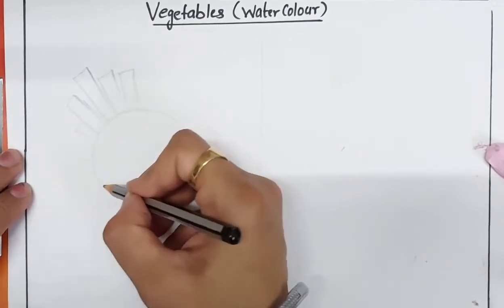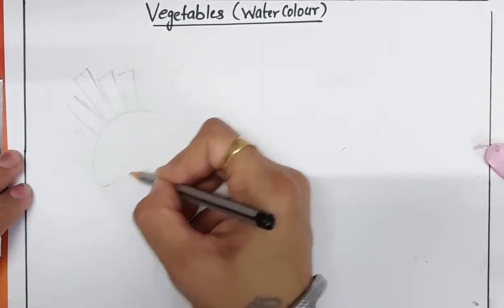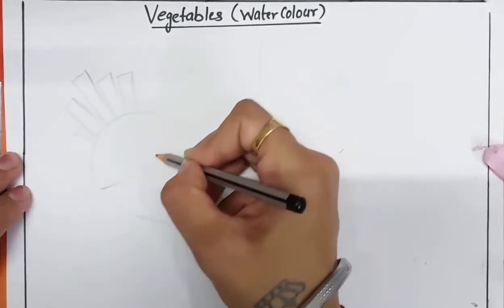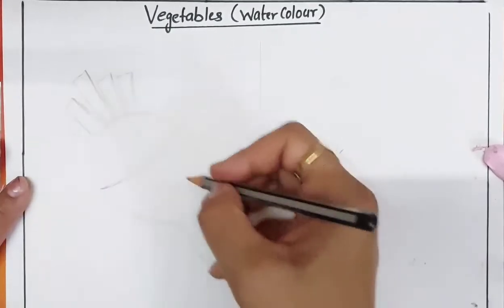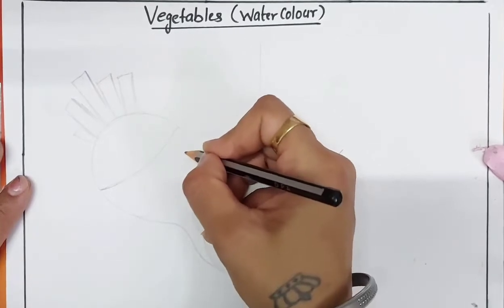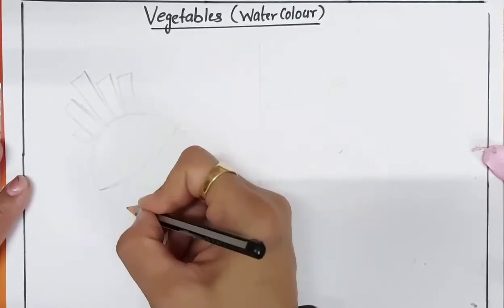Now draw one curve line like this, and draw some roots, small lines for roots.